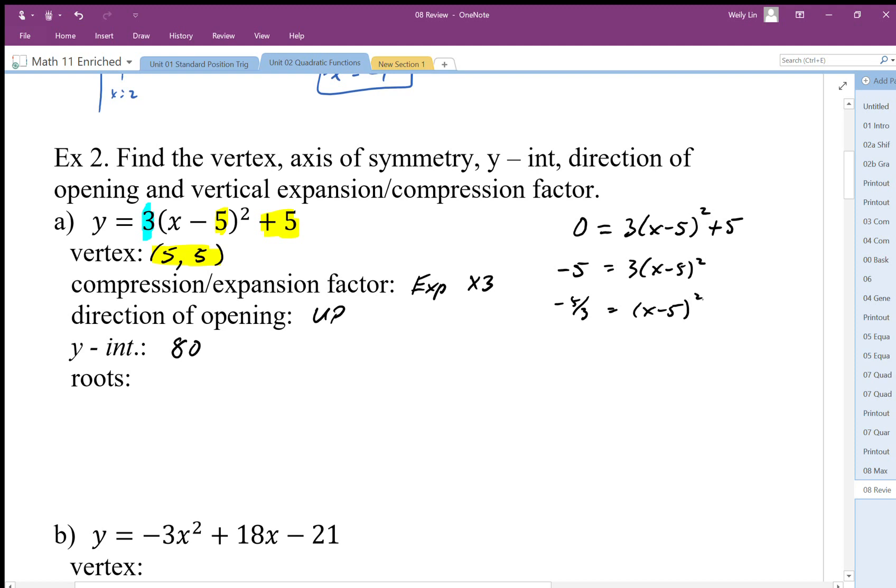We want to get rid of that squared by square rooting. Now at this point here, we can see that we're going to square root a negative value. So at this point, we can say that it's impossible to square root this. In fact, we know that the vertex is 5 up from the x-axis and it's opening up.